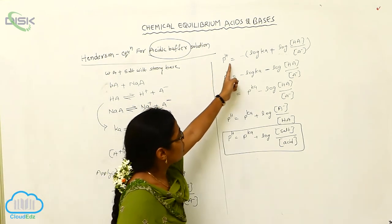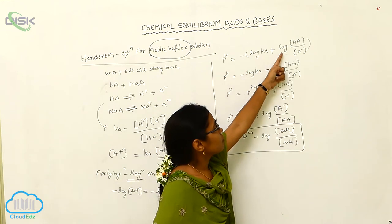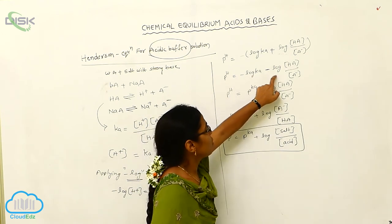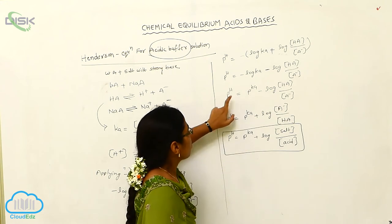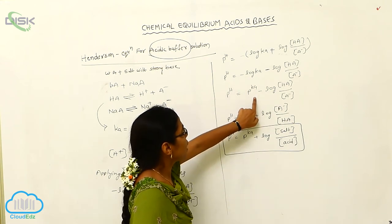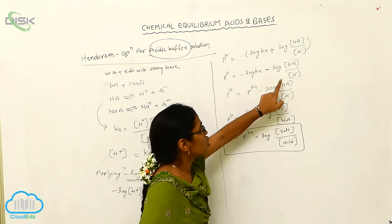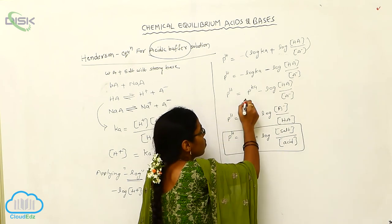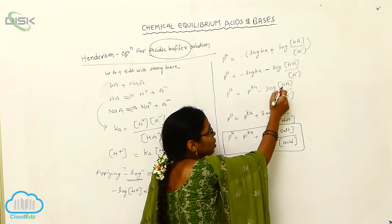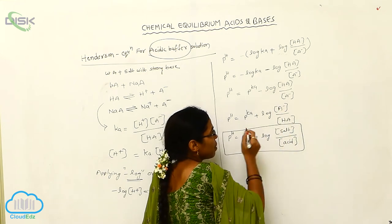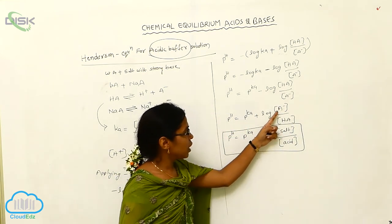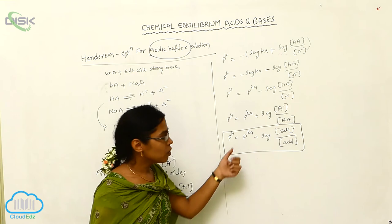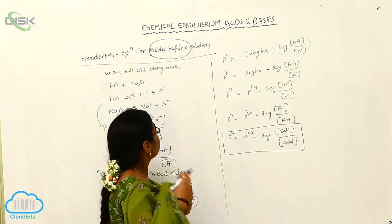So pH = minus log Ka + log([HA]/[A⁻]), which gives pH = pKa minus log([HA]/[A⁻]). Taking A⁻ to the numerator and HA to the denominator, pH = pKa + log([A⁻]/[HA]). Here A⁻ is the concentration of salt and HA is the concentration of acid. This equation is called the Henderson equation.